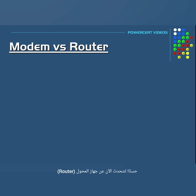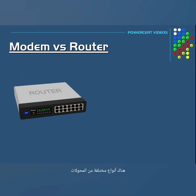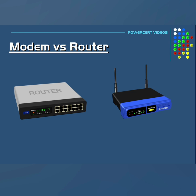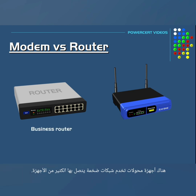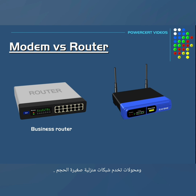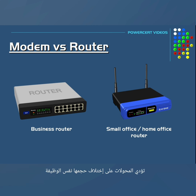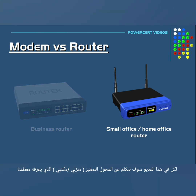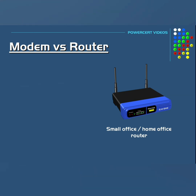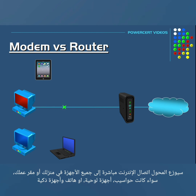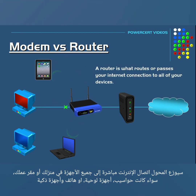Now a router comes in after the modem. There are different types of routers — routers that are used in businesses and larger organizations, and there are smaller routers that are used in homes and small businesses, but they basically do the same thing. For this video we're going to use the small office home office router that most of us are familiar with. A router is what routes or passes your internet connection to all of your devices in your home or business.